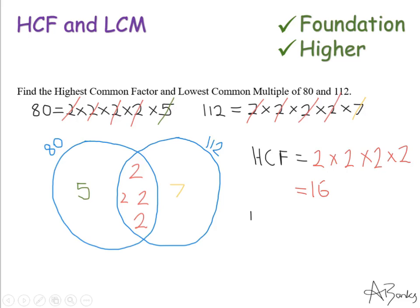Now for the lowest common multiple. This is why the Venn diagram is so useful — I multiply all of the numbers across the entire diagram together, but I only include the middle section once, not twice. So that's 5 multiplied by 16 (the four 2s in the middle) multiplied by 7. 5 times 16 is 80, and 80 times 7 is 560. So the lowest common multiple is 560.